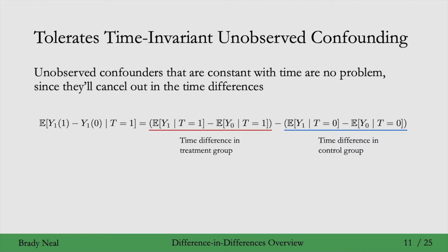One of the cool things about difference in differences is that it can tolerate some amount of unobserved confounding — specifically, unobserved confounders that are time invariant and don't change over time. Those cancel out when we take the difference, because the only thing that's different between two terms in the same treatment group is the time subscript. If the unobserved confounder is constant over time, it gets cancelled out in that difference. This is a property shared with other methods that take differences over time, like fixed effects methods.